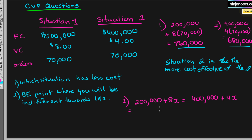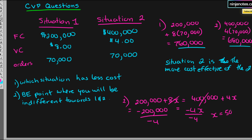We simplify: subtract $400,000 from both sides to get negative $200,000 on the left, then subtract 4x to get negative 4x on the right. Isolating for x, we find x equals 50,000. So the number of orders at which we're indifferent between situation 1 and 2 is 50,000 units.